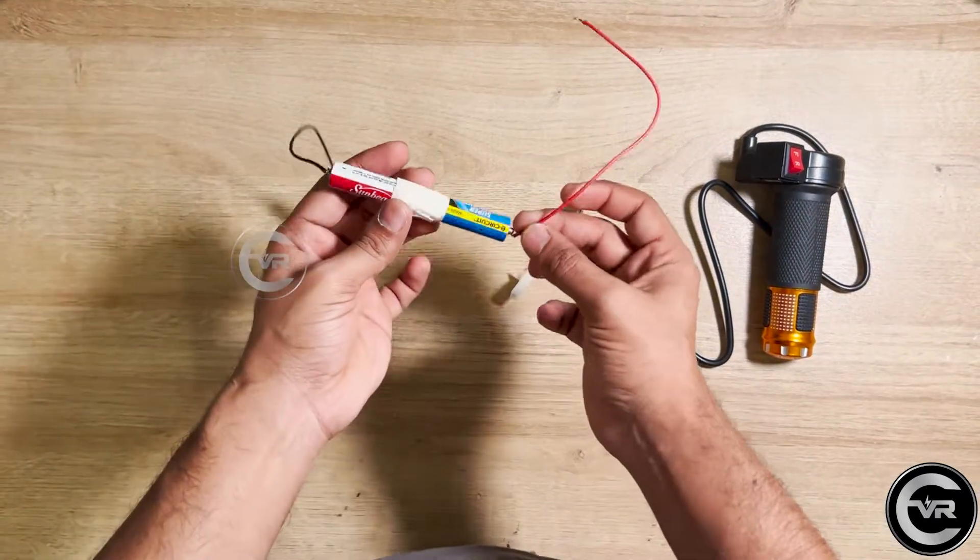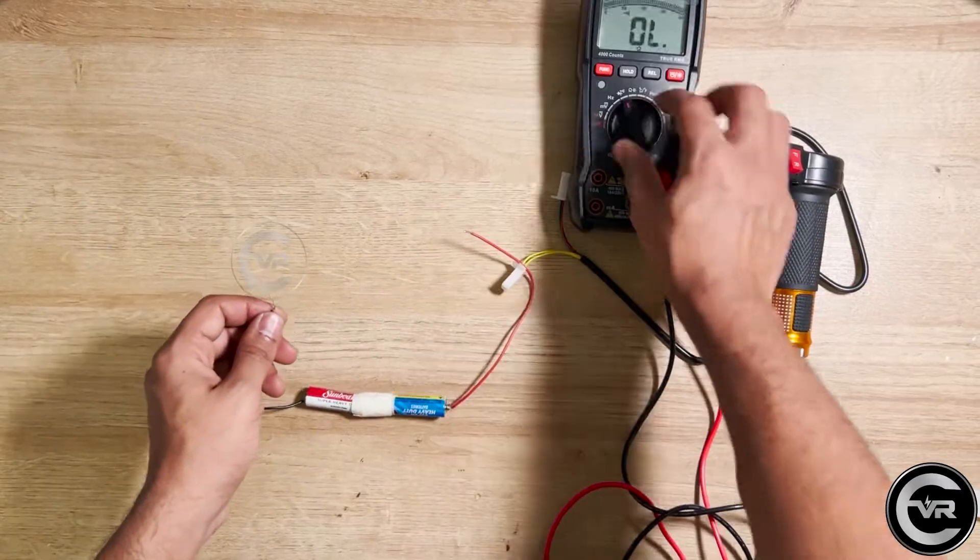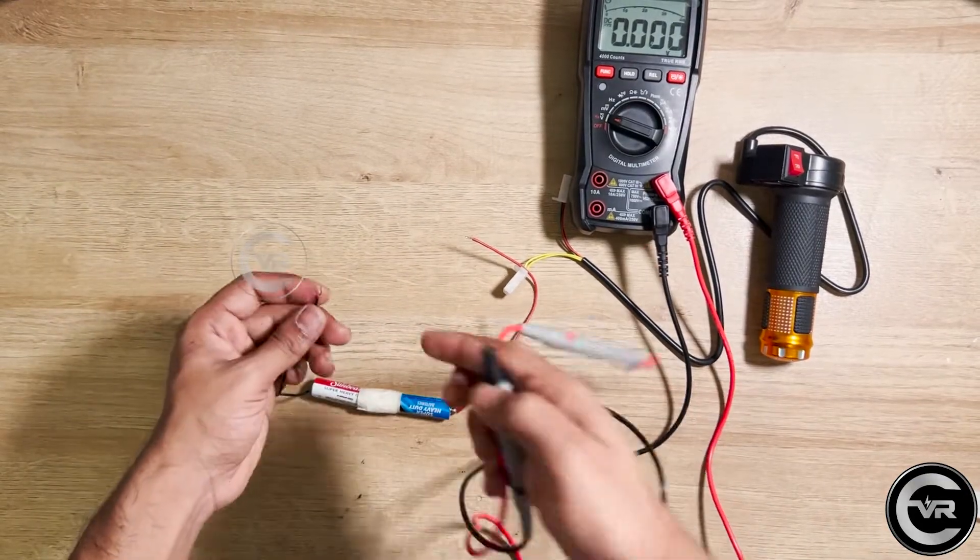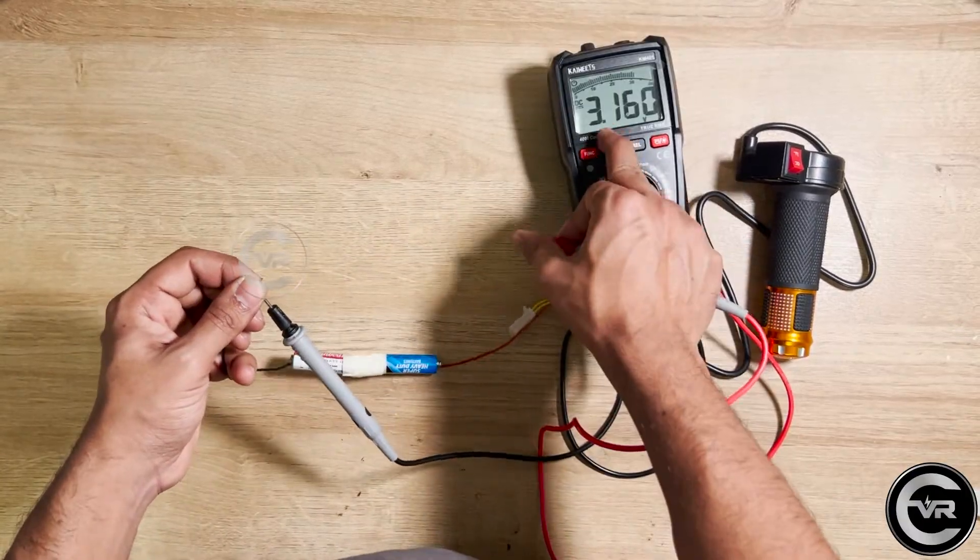To check if the throttle is working, we need a battery source—three to five volts. Here I connected two 1.5-volt batteries, which gives us three volts. This is enough for us to test the throttle.